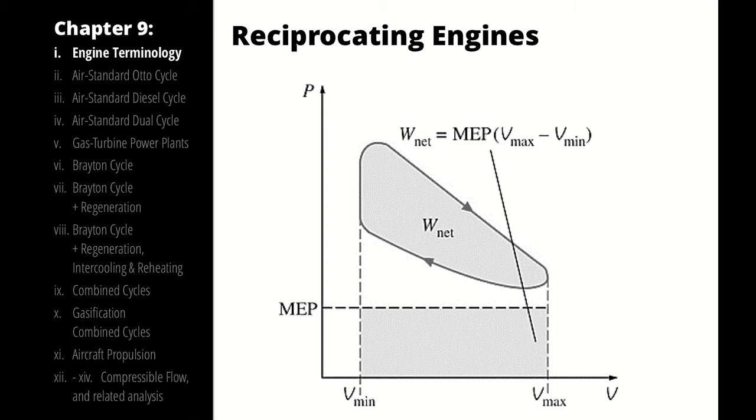You could think of this as, if you were plotting this on a PV diagram, what pressure would yield the same area under the curve, that horizontal line that was the same area as the region enclosed by that power cycle itself.